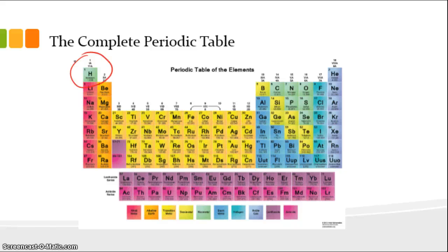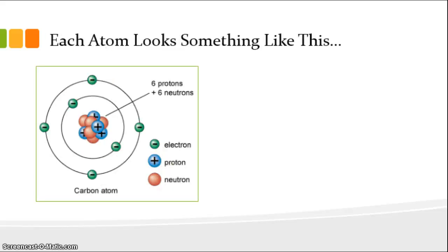Each atom looks something like this. There's a nucleus inside the atom - in this case we're looking at the carbon atom. In the nucleus of the carbon atom there are six protons and six neutrons, and around the nucleus are six electrons.